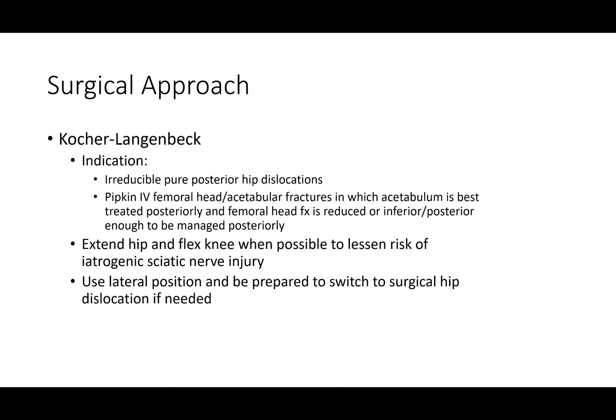Kocher-Langenbeck can be done for irreducible pure hip dislocations — if you can't get them reduced, you may need to open reduce them — or for Pipkin 4s with a posterior wall fracture. Extend the hip and flex the knee when doing this approach, just as you would for an acetabulum fracture alone, which helps to lessen the risk of sciatic nerve injury.